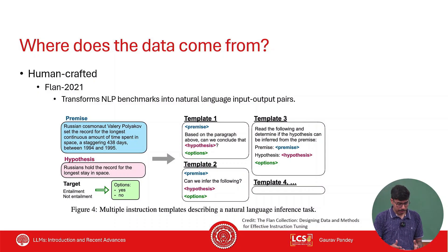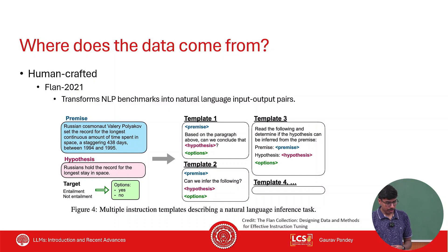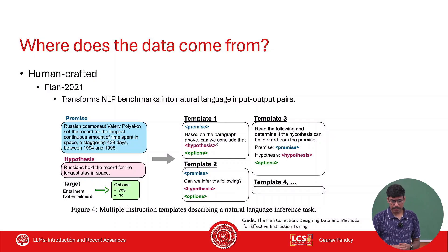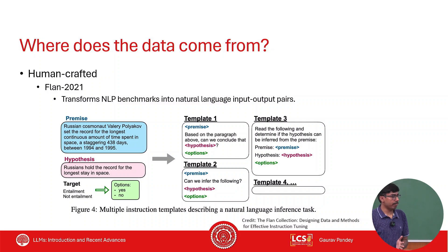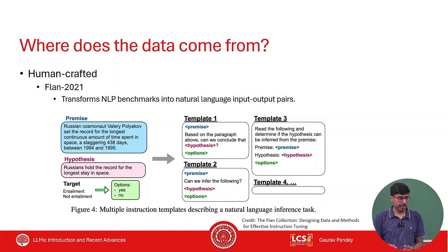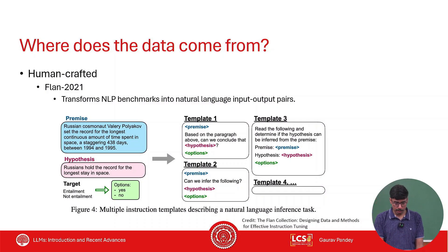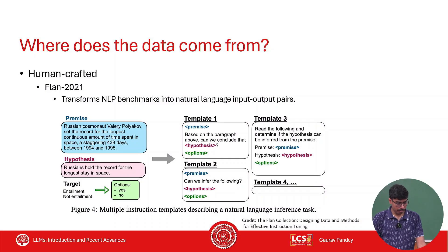For example, you have data for natural language inference — whether a hypothesis entails a premise or not. You can create a bunch of natural language templates for this task. One template might say: 'Based on the paragraph above, can you conclude this hypothesis?' Another might say: 'Read the following and determine if the hypothesis can be inferred from the premise.' For the same task you create many templates, and this creates instruction data for the instruction tuning phase. The human effort goes into template creation, and the rest happens automatically. This is how the original FLAN data was created.